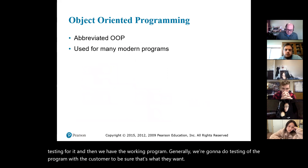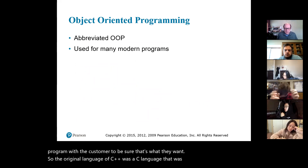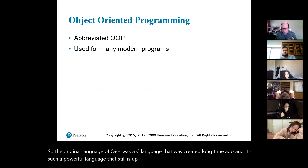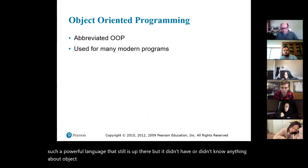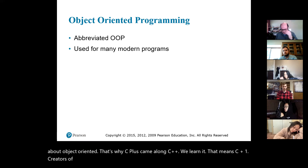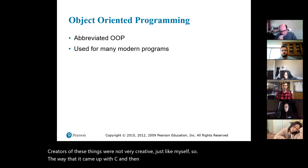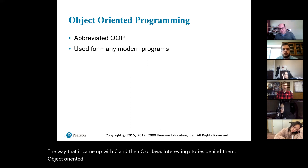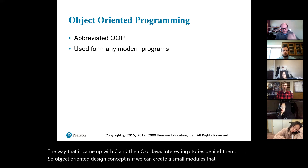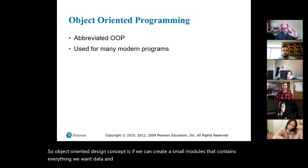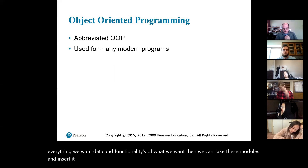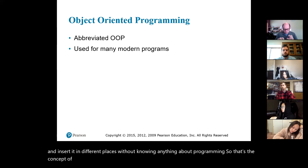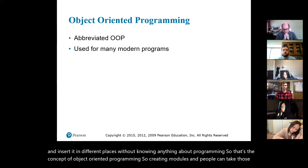The original language of C++ was C, created a long time ago. It's such a powerful language it's still up there, but it didn't know anything about object-oriented programming — that's why C++ came along. C++ means C plus one. The object-oriented design concept is: if we can create a small module that contains everything we want — data and functionalities — then we can take these modules and insert them in different places without knowing anything about the underlying programming. That's the concept of object-oriented programming: creating modules that people can place in different contexts and they just work.